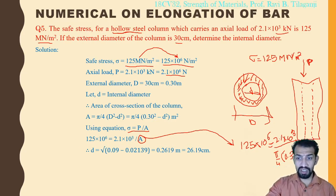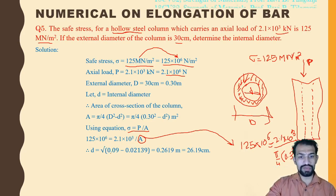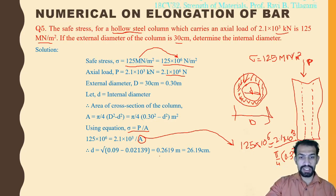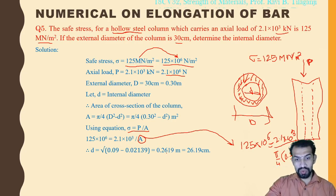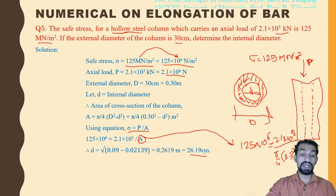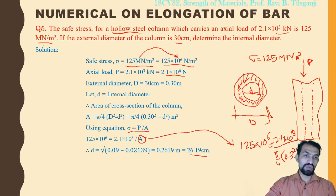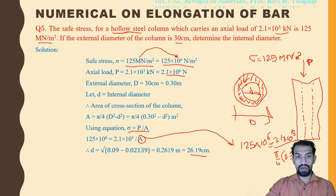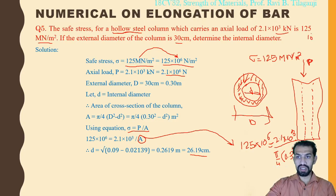After substituting and cross-multiplying, d = √(0.09 − 0.02139), which gives d = 0.2619 meters, that is 26.19 centimeters — this is the internal diameter of the column. This question was asked in external exams for about 10 marks, so be careful about this type of question.